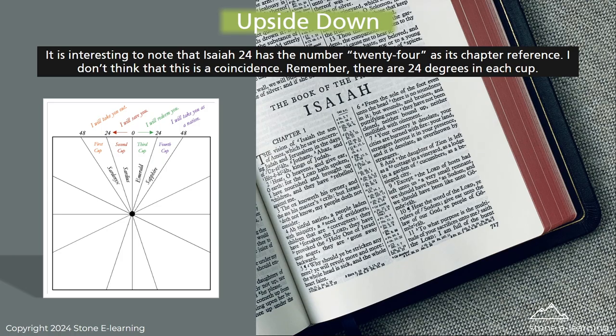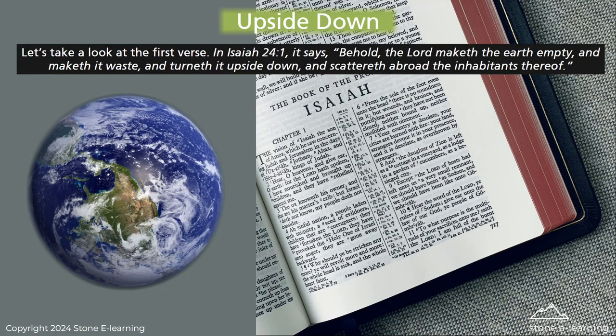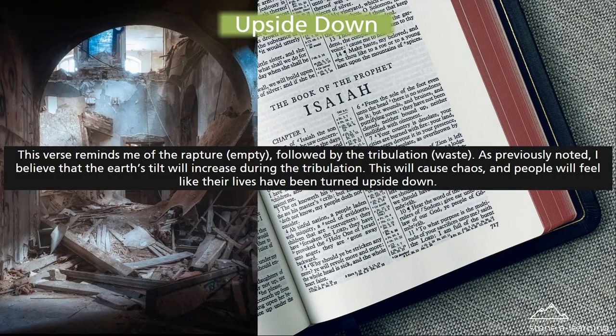It is interesting to note that Isaiah 24 has the number 24 as its chapter reference — I don't think this is a coincidence. Remember, there are 24 degrees in each cup. In Isaiah 24:1, the verse reminds me of the rapture — empty — followed by the tribulation — waste. I believe that the earth's tilt will increase during the tribulation.